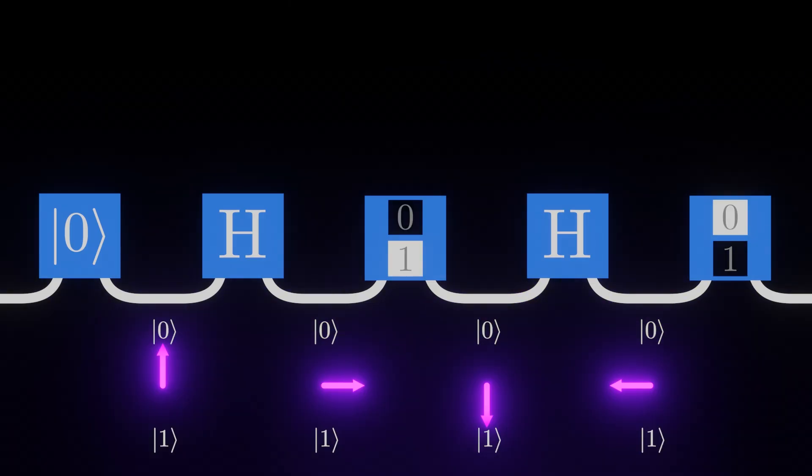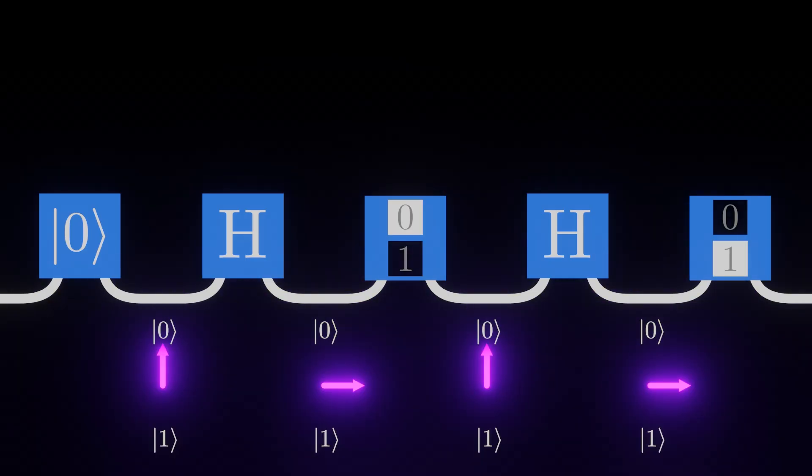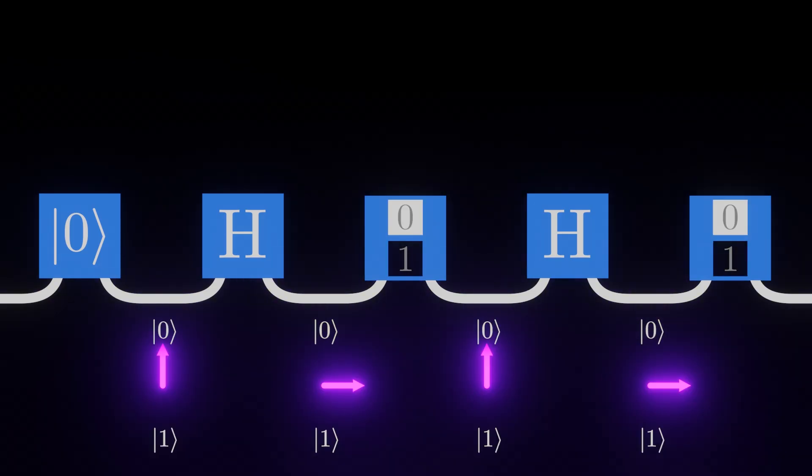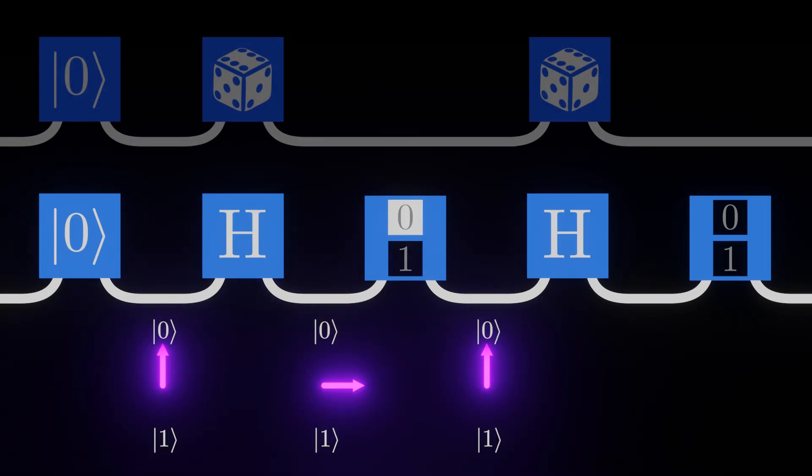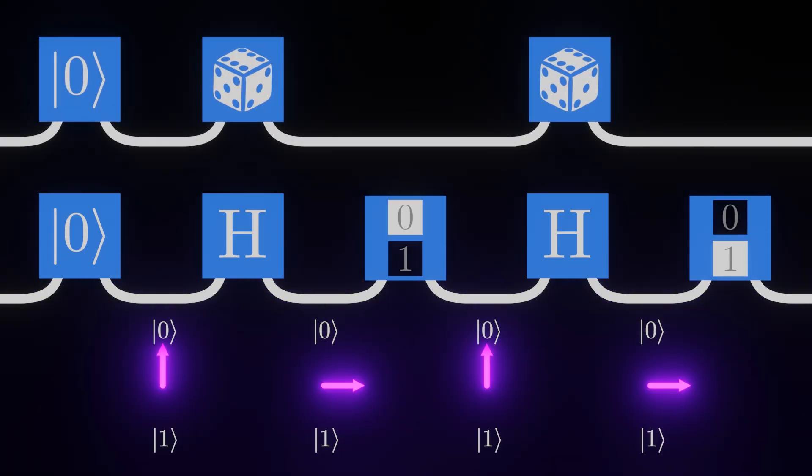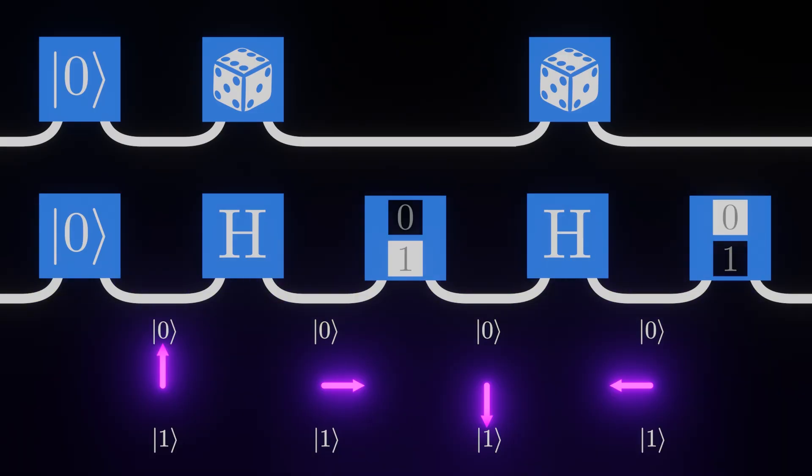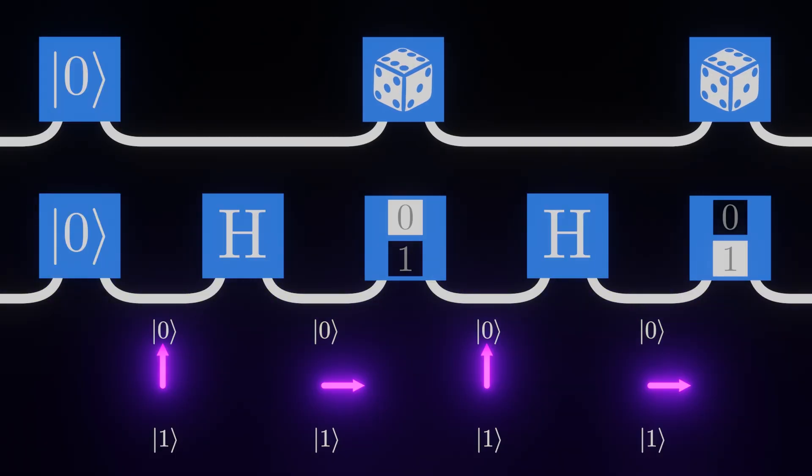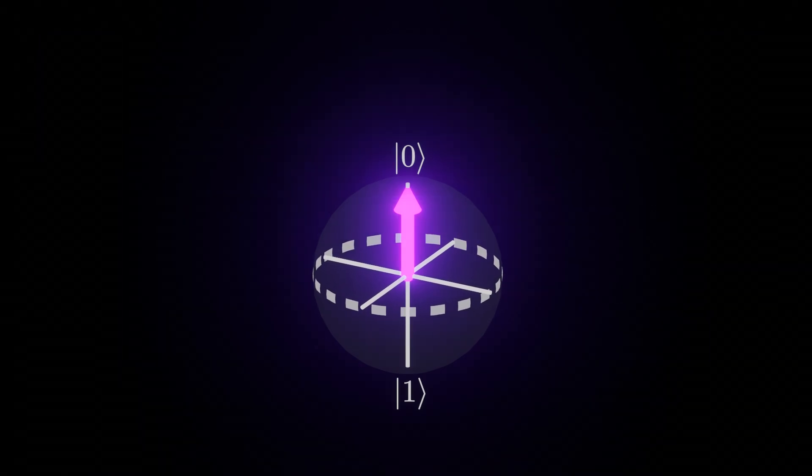Since the measurement collapses the qubit, we see that the second H gate now appears to randomize the qubit, just like the first. Recall that this mirrors the behavior we would expect if the H gate by itself acted like a randomizer. This tells us that the randomness we see is not a property of the H gate itself, but a property of measurement.